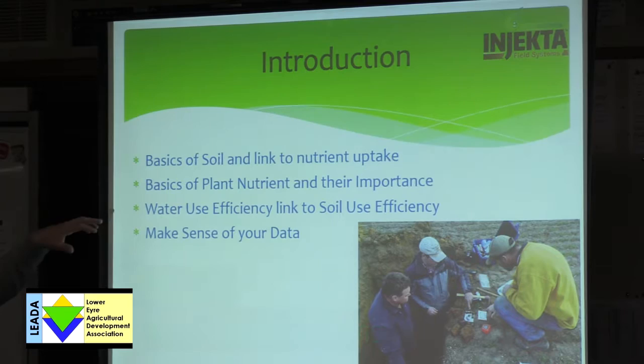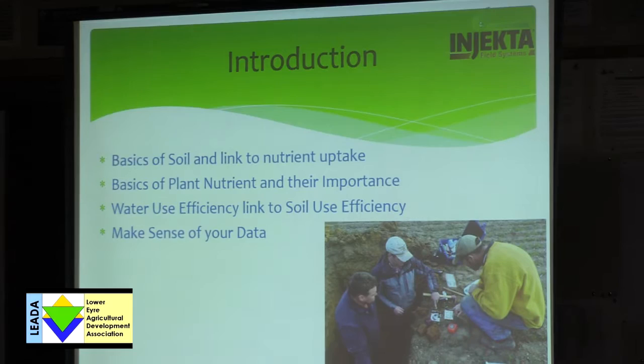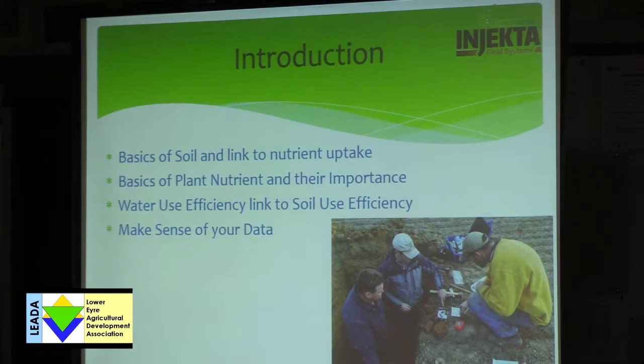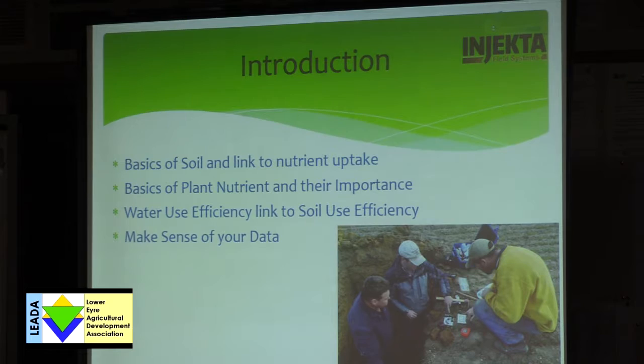Water use efficiency — which you've all heard about — is millimetres of rain to tonnes per grain, then linking that back to soil use efficiency. Often when we get these water use efficiency figures, we're not really given a platform to work out how we actually improve it. We can't always just base it on rain, because nine times out of ten we're getting less rain rather than more, unless you live in Cummins.